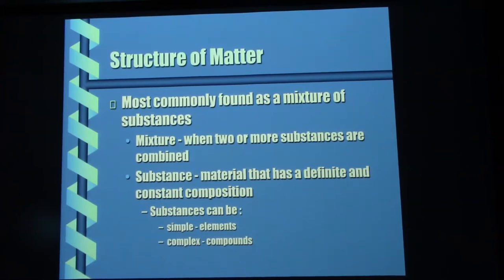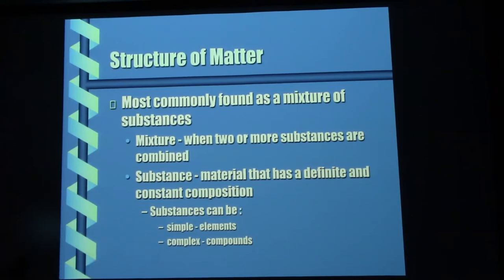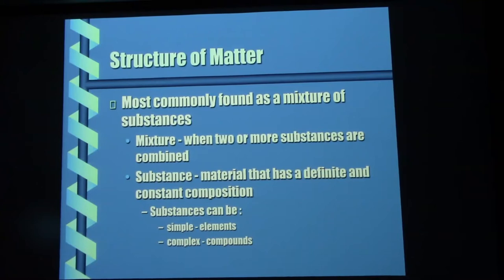Substances: any material that has a definite and constant composition. A substance is slightly different. In its simple form, like if you had a chunk of lead, then that is elemental lead — it's a substance, we can identify it. There are also compounds. Water, for example — it's hydrogen and oxygen mixed together in liquid form. It's not an element, it's a compound, but it can be referred to as a substance.